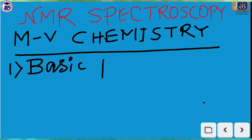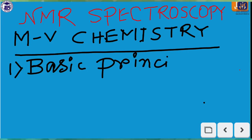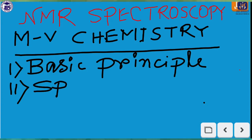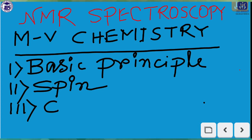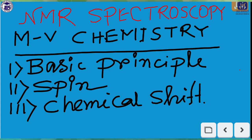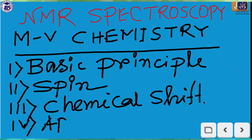We'll discuss the spin of the nuclei or nucleus, then the relationship between magnetic moment and the spin of the nucleus, then chemical shift, and finally the application of NMR spectroscopy.